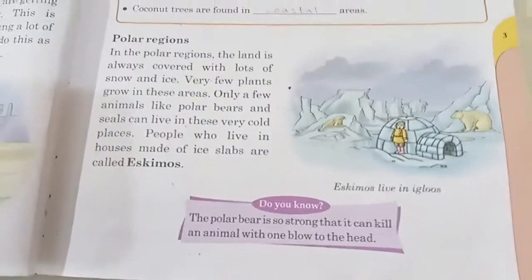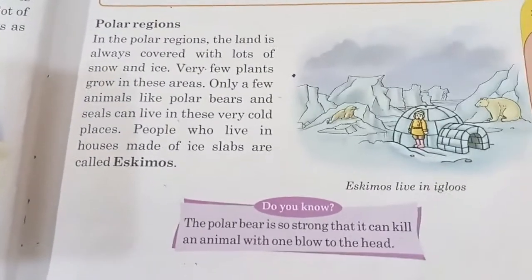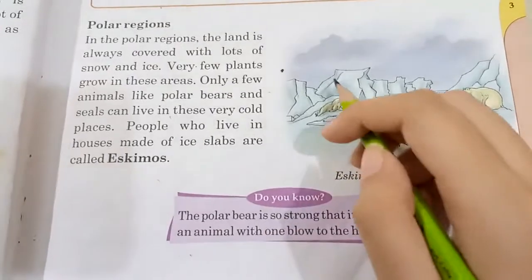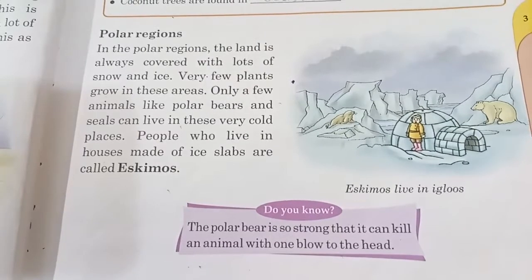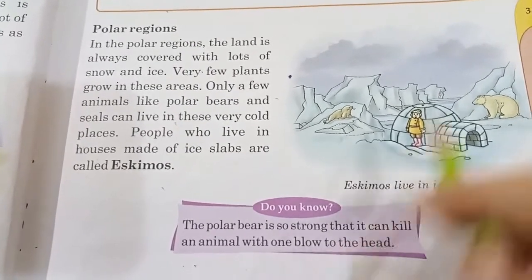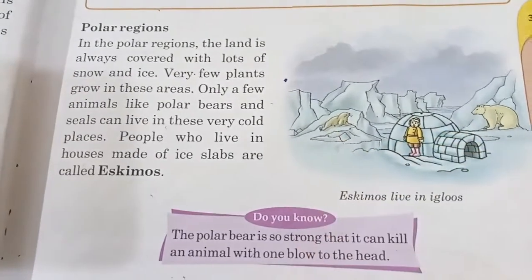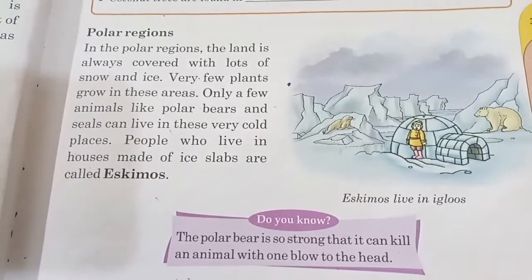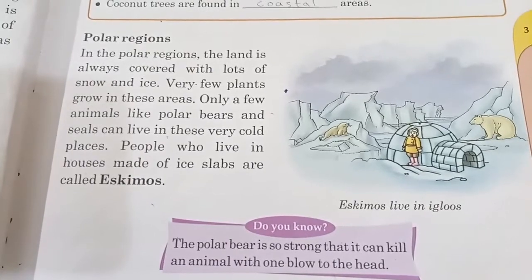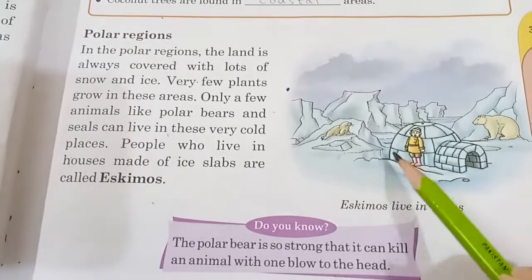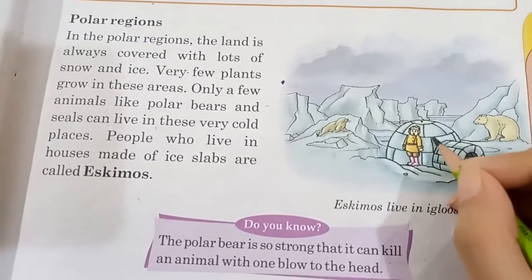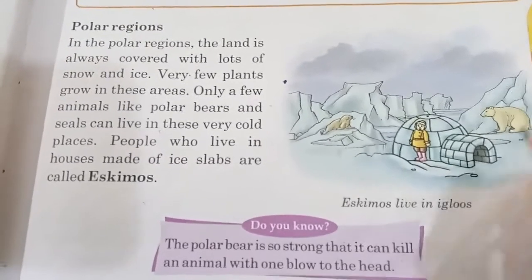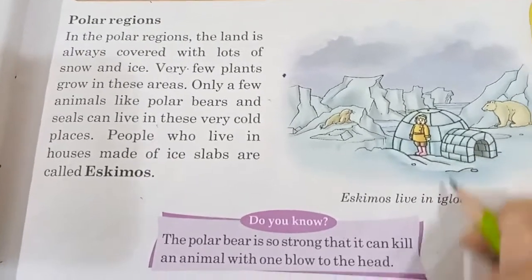Now come to the polar region. In the polar region, the land is always covered with lots of snow and ice. Very few plants grow in this area. Few animals like polar bears and seals can live here. People of the polar region are called Eskimos. They made their houses with the help of ice slabs, and the houses which are made up of ice slabs are called igloos.